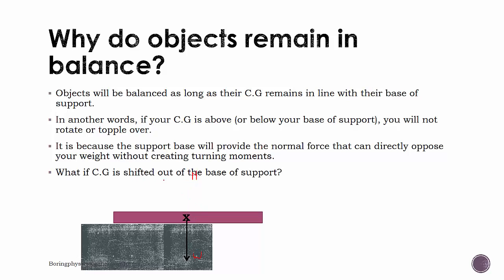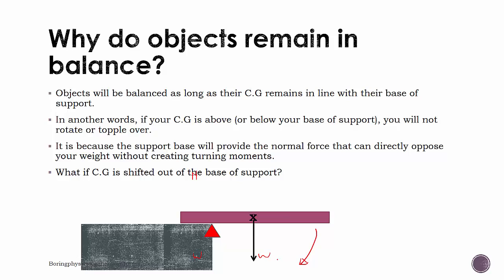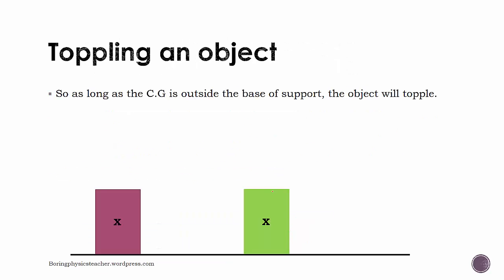What if the center of gravity shifts outside the base of support? Even though the object is partially supported, the weight now acts outside the base. The edge of the support acts as a pivot, causing the object to rotate and fall. The general conclusion is: as long as the center of gravity is outside the base of support, the object will topple.